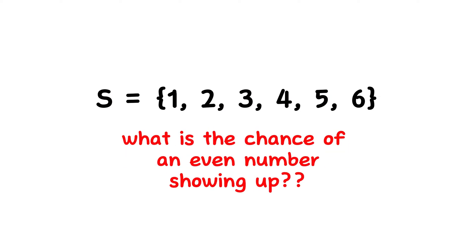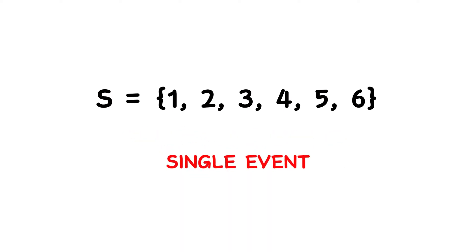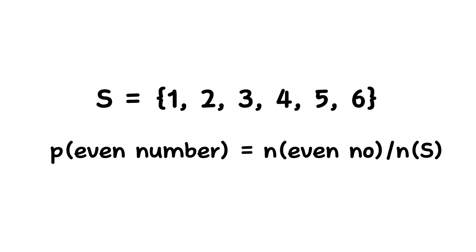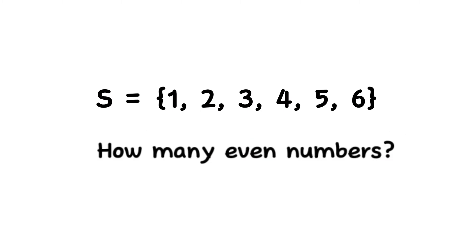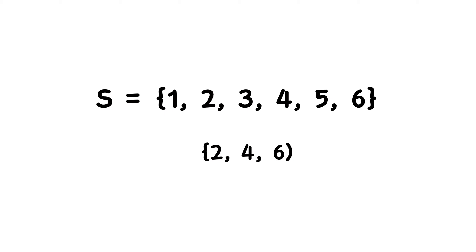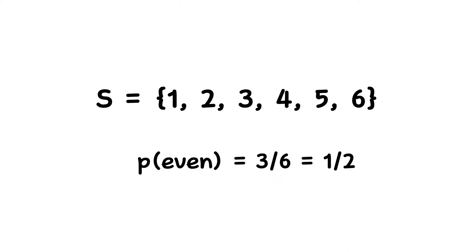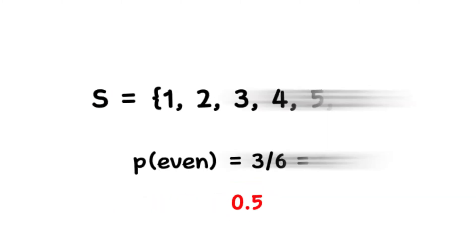What is the probability that an even number is going to show up? An even number is just a single event — hence it is a simple event. The probability that an even number shows up when I roll a fair die just once is equal to the number of even numbers in the experiment divided by the size of the sample space. We have three even numbers: 2, 4, and 6. The total sample space has six numbers, so the probability is 3/6, which equals 1/2, or 50%, or 0.5.